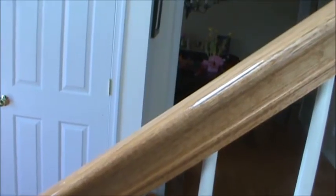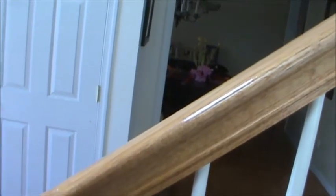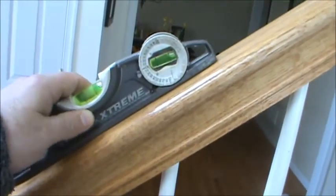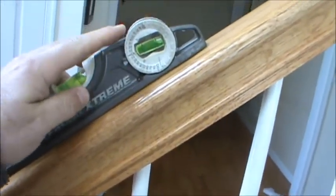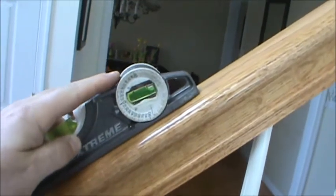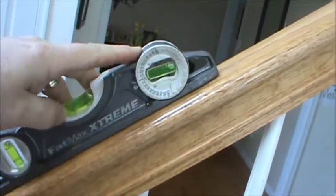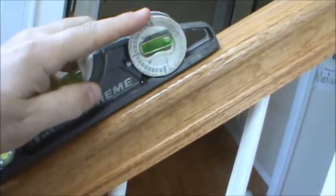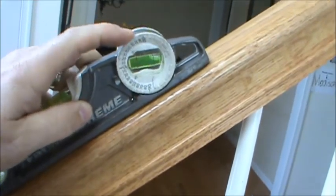There's also an angle finder gauge which I have found to be quite handy. I'll show you how that works. So let's say you don't know what angle something is. For instance, this banister - we're on top of a railing here.